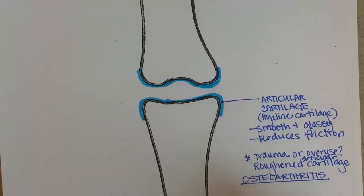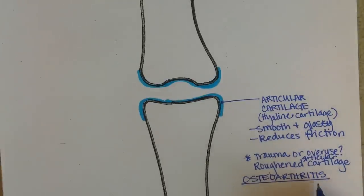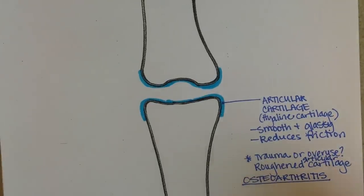If they have roughened articular cartilage, basically what that person will experience is what we call osteoarthritis. Osteo means bone and arthro means joint. So because the bone is getting roughened on the ends, they're having inflammation of their joints.